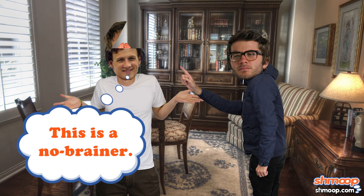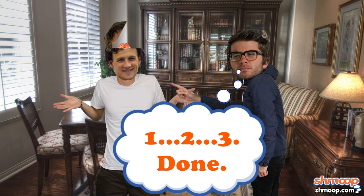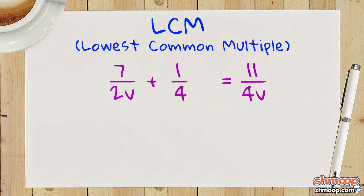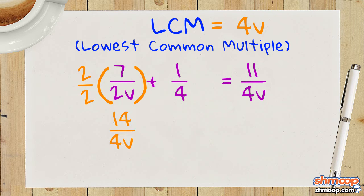This is only slightly more difficult than counting his brother's brain cells. The lowest common multiple here is 4V. Multiplying 7 over 2V by 2 gives us 14 over 4V. Multiplying 1 over 4 by V gives us V over 4V.